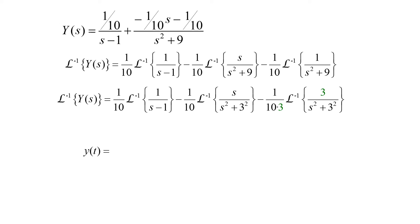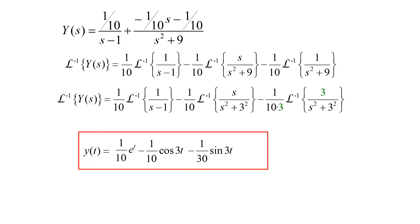Taking the inverse Laplace transforms: one-tenth times the inverse Laplace of 1 over s minus 1 gives us one-tenth e to the t. Minus one-tenth times the inverse Laplace of s over s squared plus 3 squared gives us negative one-tenth cosine(3t). And negative one-tenth times three, using the inverse Laplace of 3 over s squared plus 3 squared, gives us negative one-tenth sine(3t). This is the solution to our differential equation.